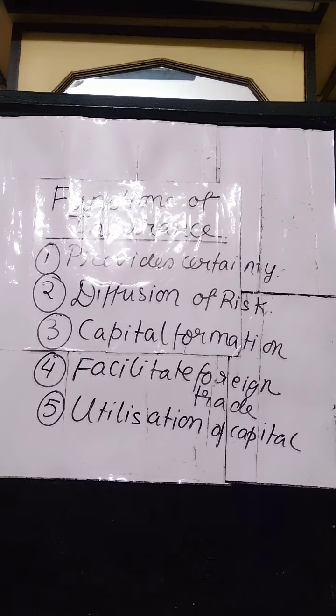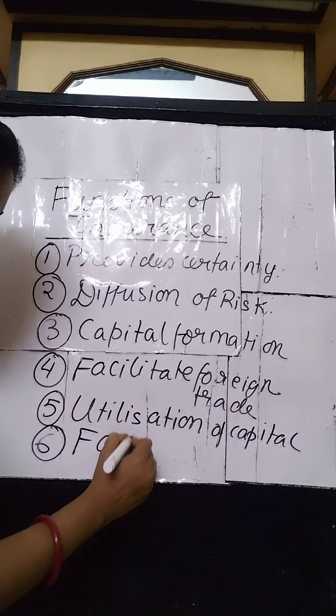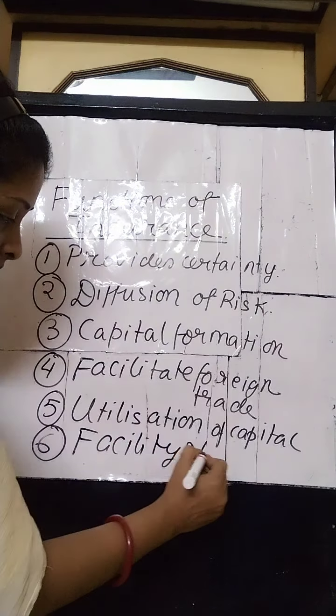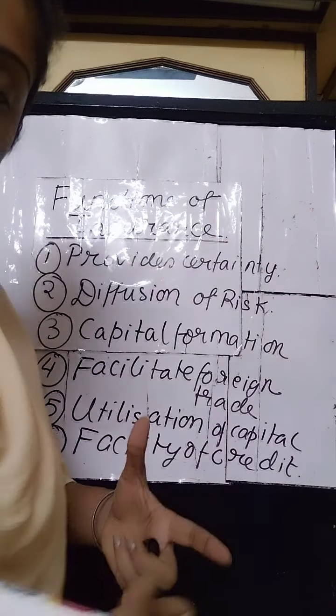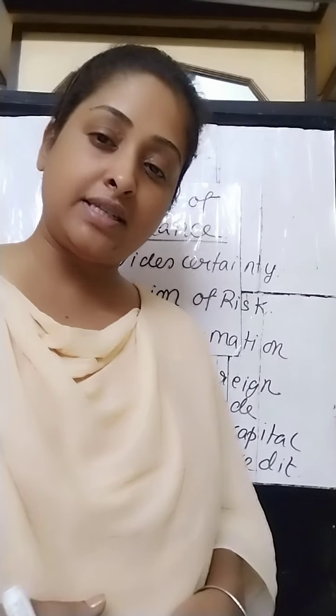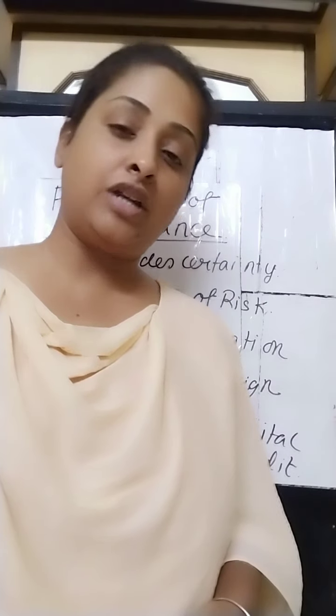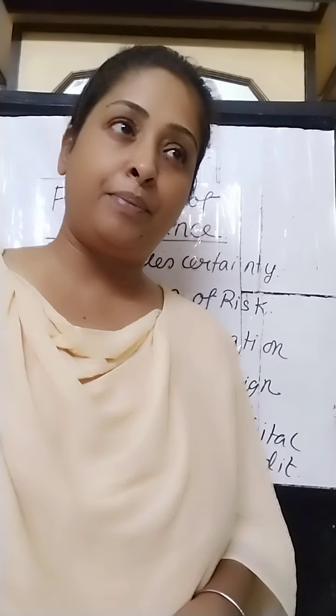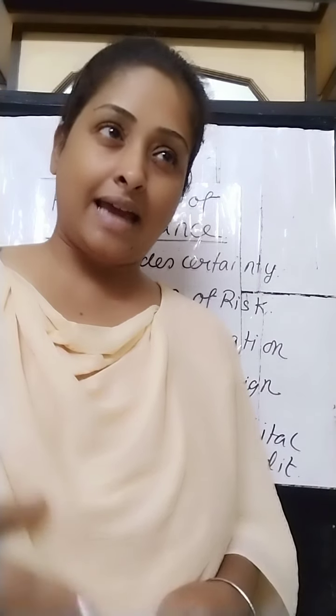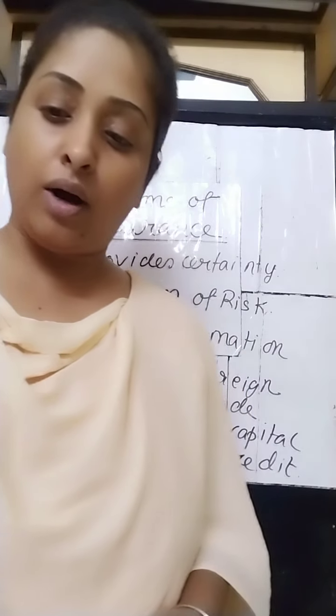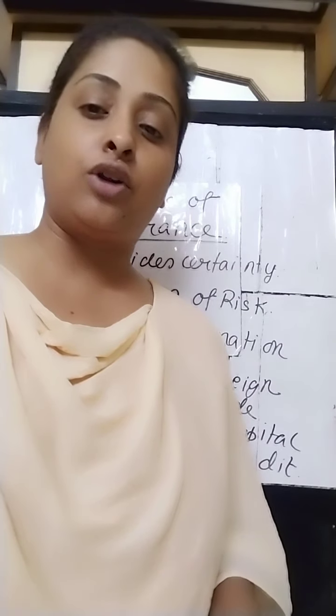The next important function is facility of credit. Loans can be obtained against the security of life insurance policies. If you have proper papers for a life insurance policy, you can obtain a large amount of loan from any bank or financial institution, because the policy acts as a document of your credit worthiness. A large amount of loan can be obtained by showing the insurance papers, so insurance acts as credit worthiness.